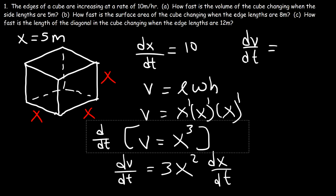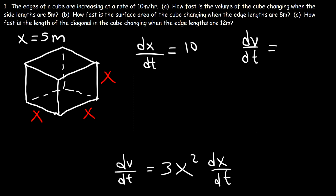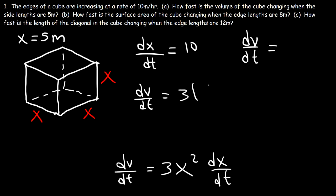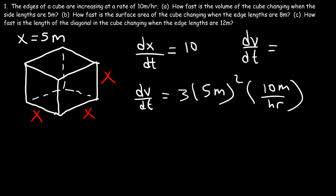Let's plug in our values. We can see that x is 5 and dx/dt is 10 meters per hour. Now let's do the math: 5 squared is 25, 3 times 25 is 75, and 75 times 10 is 750. So dv/dt is equal to 750.